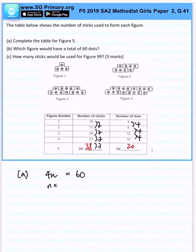Pattern number 15, or figure number 15, will give us 60 dots. Okay, how about part (c)? How many sticks will be used for figure 99? Now we know that the pattern formula is 7n plus 3.